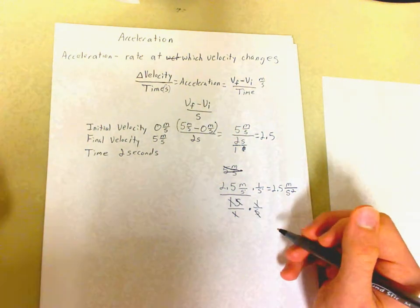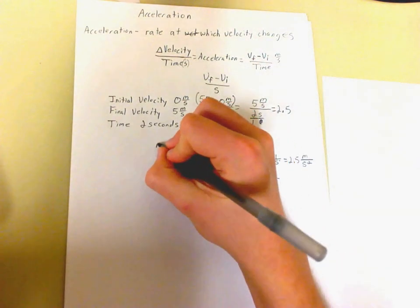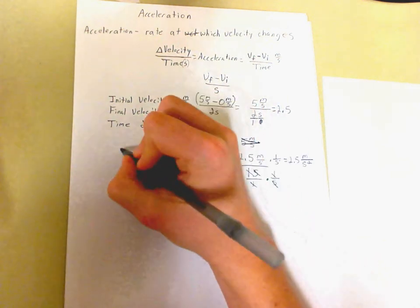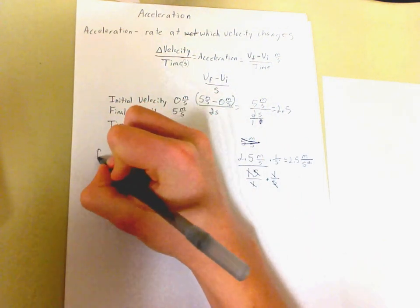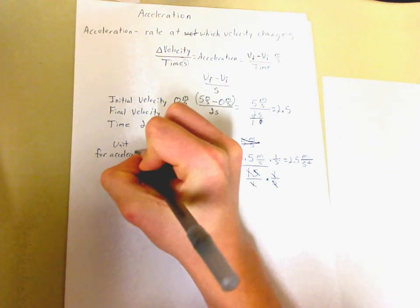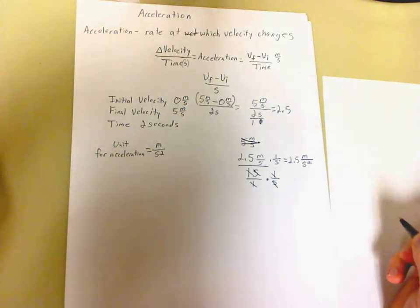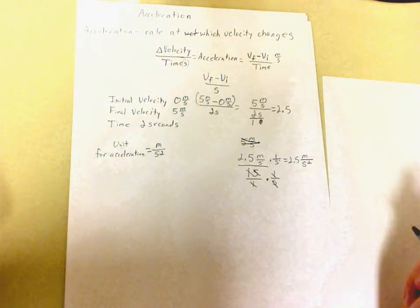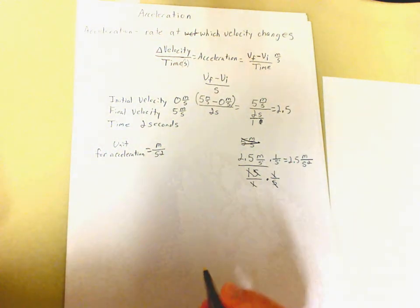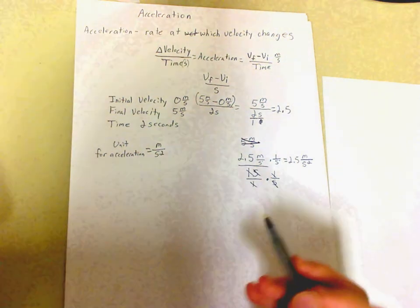All right, so meters per second squared is the unit for acceleration. Unit for acceleration, meters per second squared. That is very important. And this is a derived unit. Remember, we've talked about derived units before.